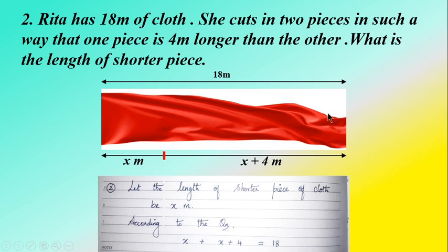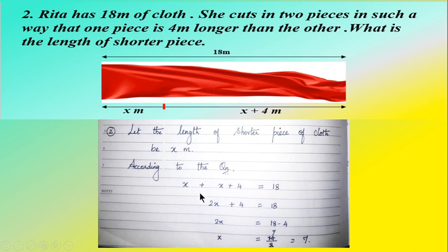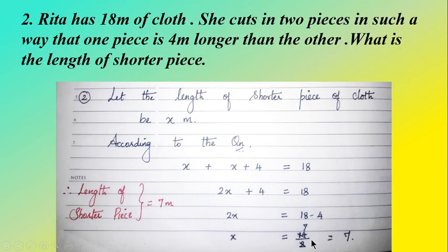The total length is 18 metres, and 'total' means we add: x plus (x plus 4) equals 18. Since x and x are like terms, we get 2x plus 4 equals 18. Moving 4 to the right-hand side gives 2x equals 14. Dividing both sides by 2, x equals 7. Therefore the length of the shorter piece is 7 metres.